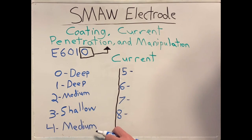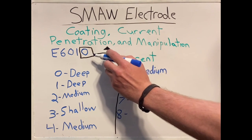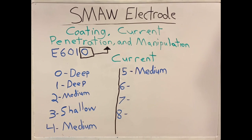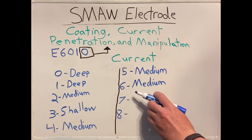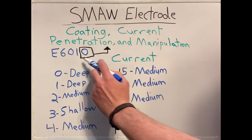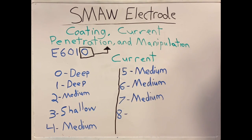If our last number is a four, it provides medium penetration. If the last number of our electrode is a five, it will also give us medium penetration. If our last number for our rod is a six, it will give us medium penetration. If our rod ends in a seven, it will give us medium penetration.